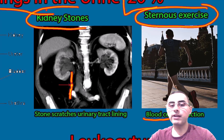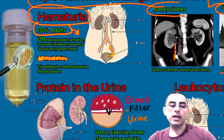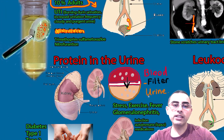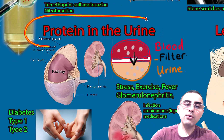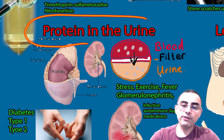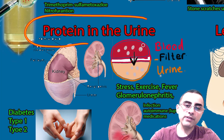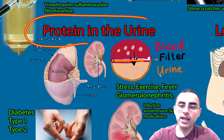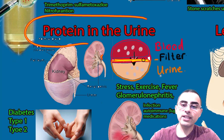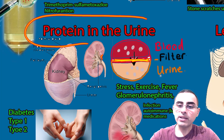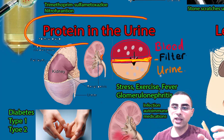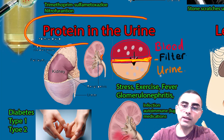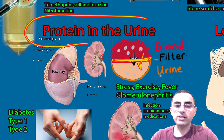The second most common abnormal finding in urine is proteinuria — when proteins leak into the urine from the blood. In the kidney there is a filter that should resist protein leakage, but if the kidney is damaged, it cannot filter properly and proteins leak into the urine, causing proteinuria.